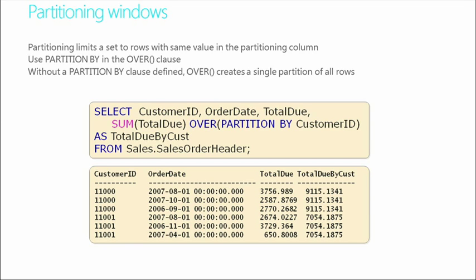So as you can see here, we have a select customer ID, order date, and total due. We're going to use an aggregate function of sum on the total due, create a total due for that particular customer. Then we have the over partition by the customer ID — that's what we're going to create this content on — as total due by customer. We'll grab this from sales.salesOrderHeader. Customer ID 1100 has a total due of $3,756, but the total due by the customer is $9,115. If you look at the three rows for customer ID 1100 and add up $3,756, $2,587, and $2,770, those values will come close to that $9,115.